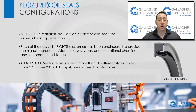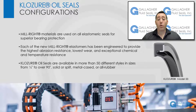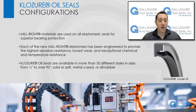Closure oil seals are available in more than 50 different styles, in sizes from quarter inch to over 90 inches, solid or split, metal cased, or all rubber. They have had a strong brand presence in the United States since the 1920s. Today, they are also manufactured and branded in China and Germany.